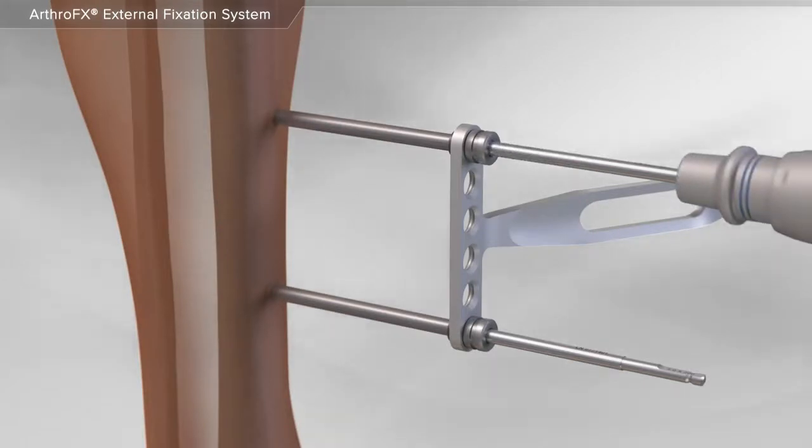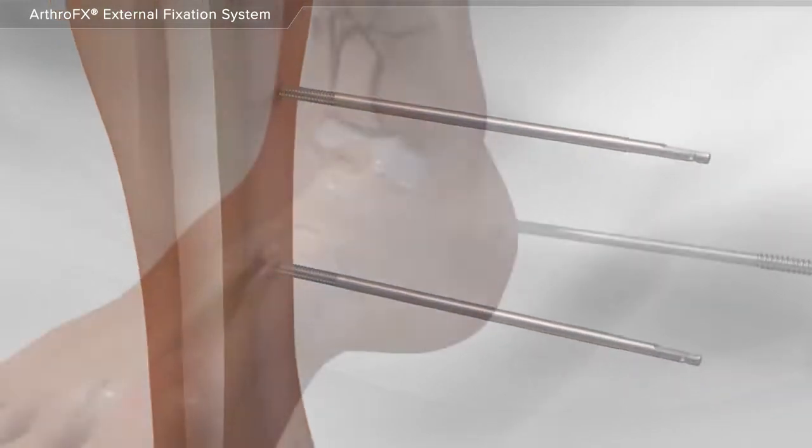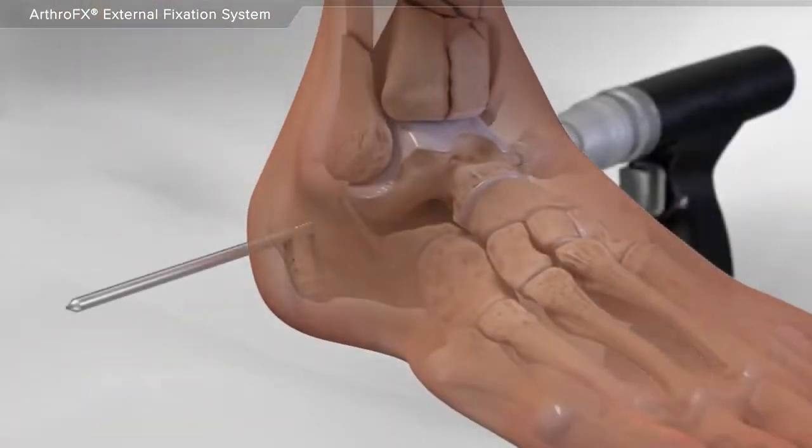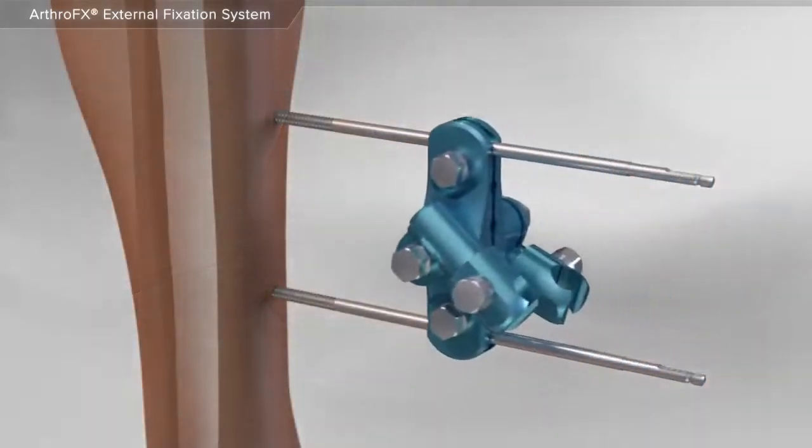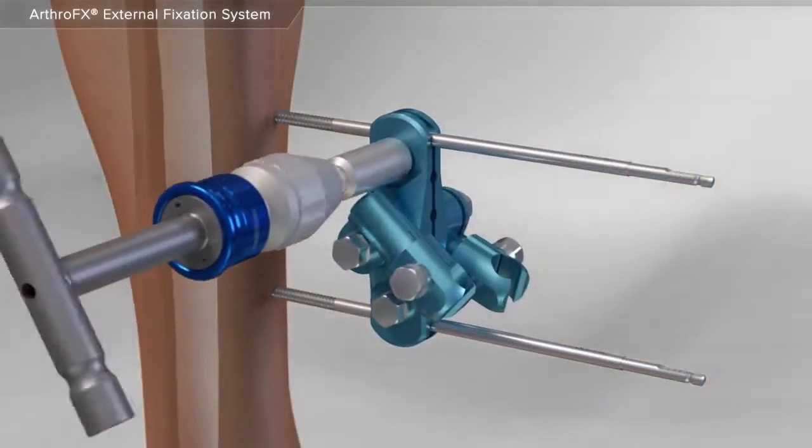With the use of special instrumentation, your surgeon places two pins in the bone just above the fracture. Next, an additional pin is placed through the heel bone below the level of the fracture. A special clamp is placed onto the two pins and secured into place.